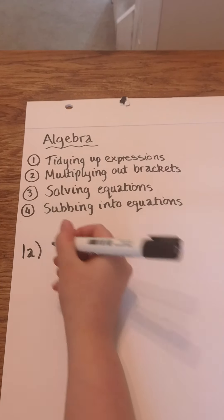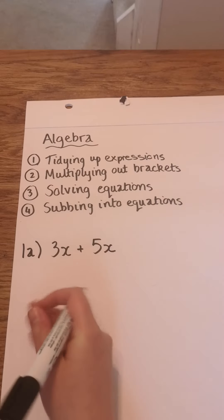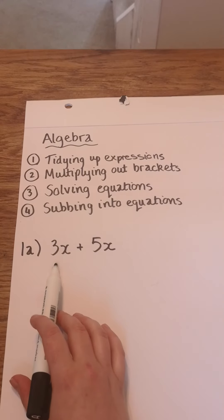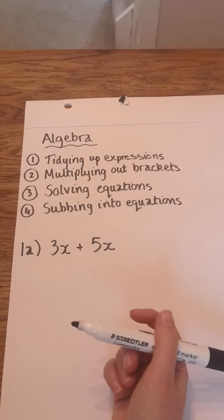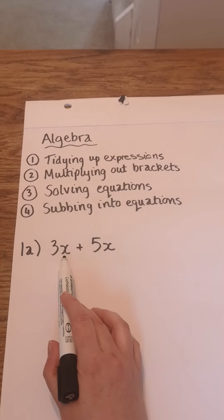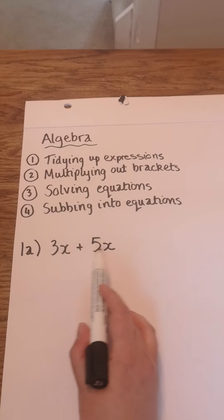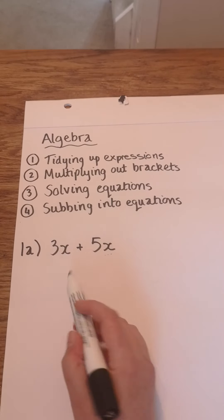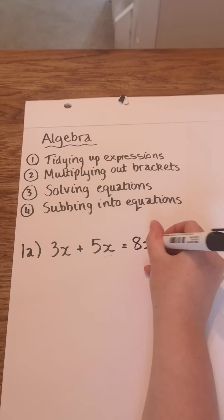First, we're going to look at tidying up expressions. An expression is something that doesn't have an equal sign — tidying up just means simplifying. This expression can be simplified because both terms have x values next to them. If they have the same term attached, you can add or subtract them like normal. So three lots of x plus five lots of x gives you simply eight x.